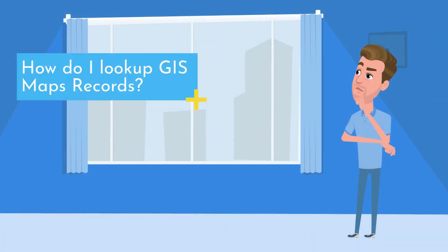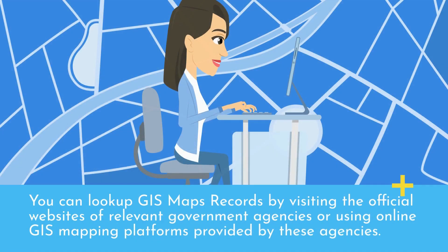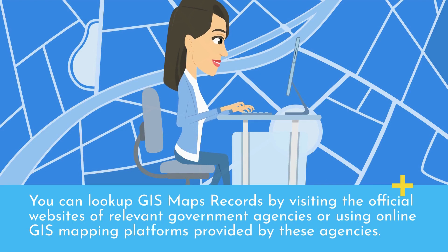How do I look up GIS Maps records? You can look up GIS Maps records by visiting the official websites of relevant government agencies or using online GIS mapping platforms provided by these agencies.